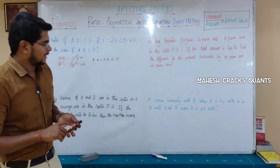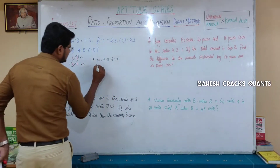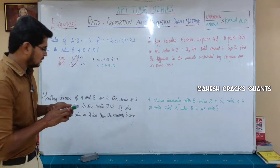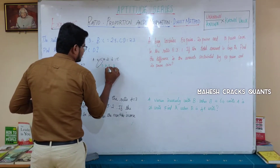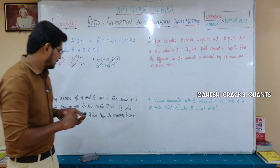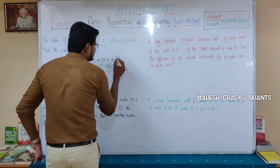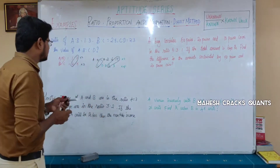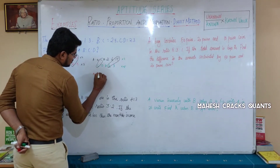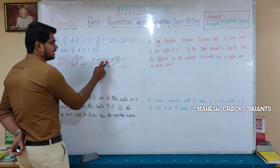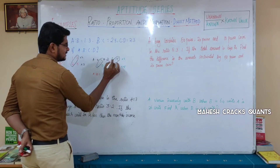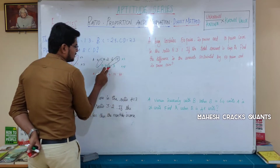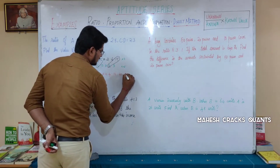Now we have a:b:c as 2:6:15. Next, we combine c:d. The c value is 15 and from c:d=2:3, the c value is 2. LCM of 15 and 2 is 30. Substituting: a=2×2=4, b=6×2=12, c=15×2=30, and d=3×15=45. So a to b to c to d equals 4 to 12 to 30 to 45. First question is over.